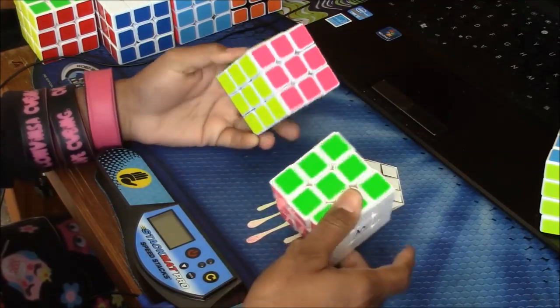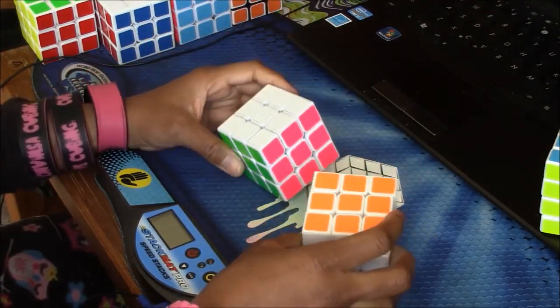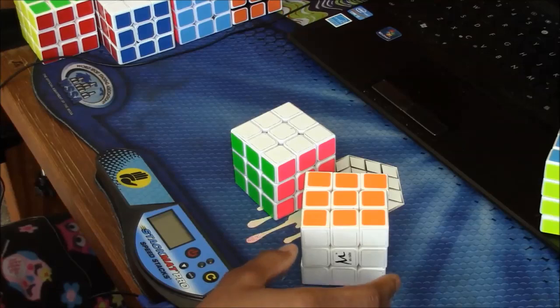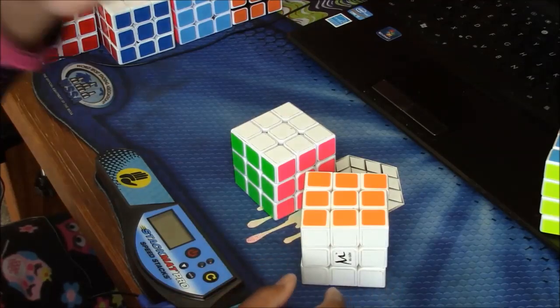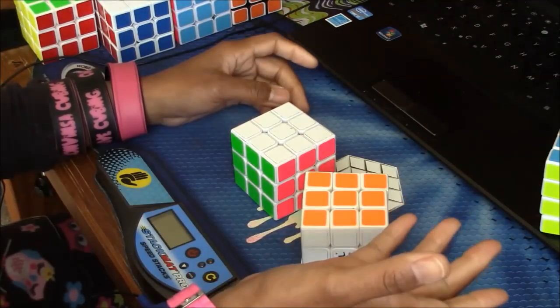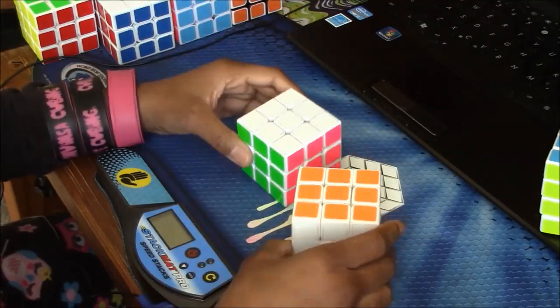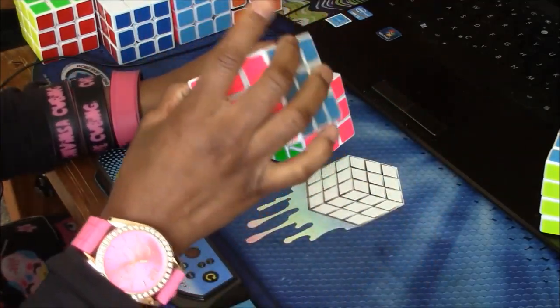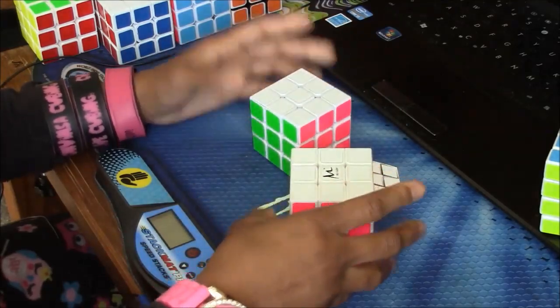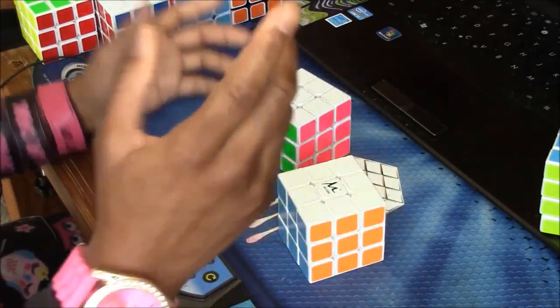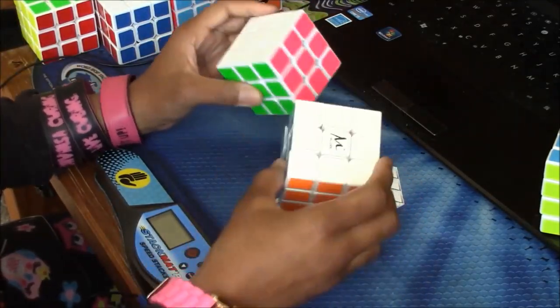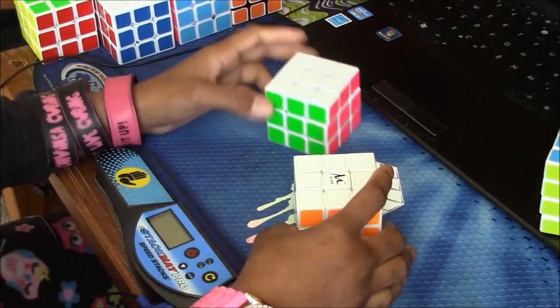I really can't pick and if the world's gonna end and they force me to pick a cube, I would have to pick, since the world's ending and the aliens are gonna take me to their planet and they want me to just bring one cube, I'll bring the CX3 because it's not fair, but I would have to let go of the Weilong, sadly.